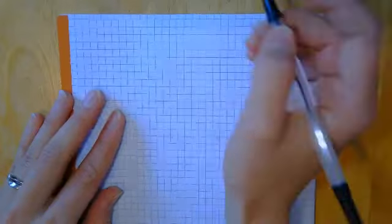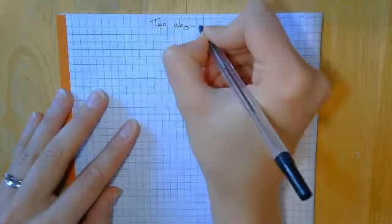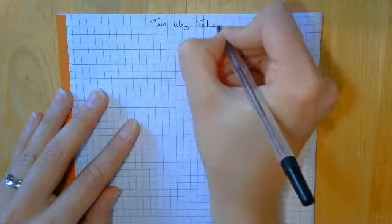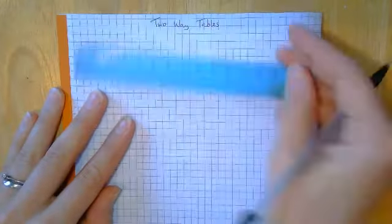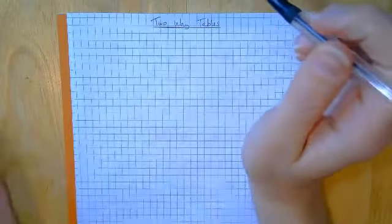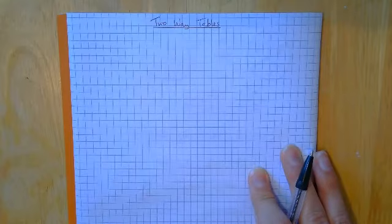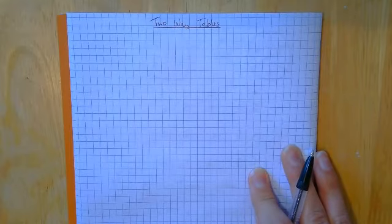Today we're looking at two-way tables and again you'll just need a ruler today. We're looking at what we call two-way tables which, like the sample space diagrams that we were looking at, two-way tables help us to write down information in a really logical way.